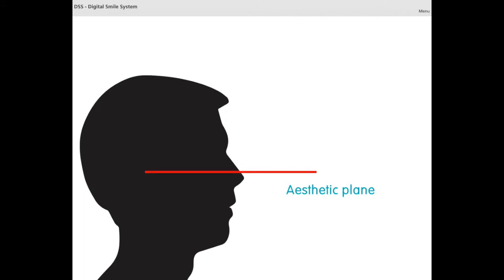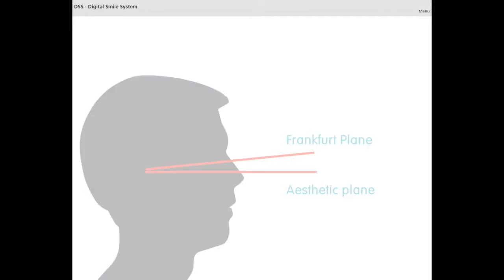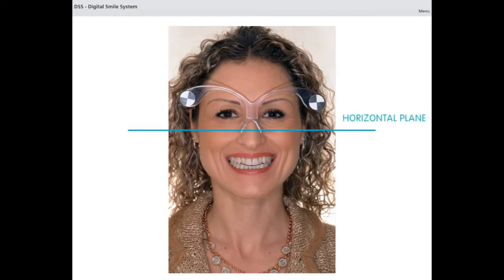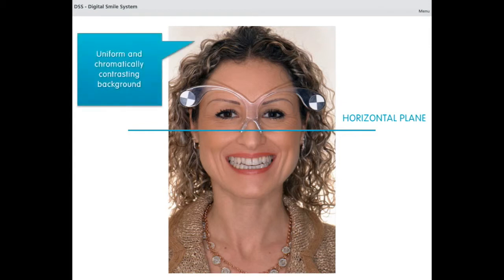The arbitrary plane obtained between the porion as the rear reference point and an imaginary point 10 cm lower than the orbital as the front reference point has proved to be the most analogous in relation to the horizontal plane. The patient should look straight into the camera, keeping the bipupillary plane as parallel as possible to the horizontal plane.